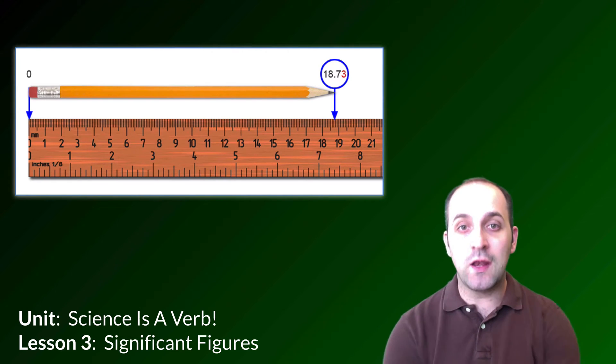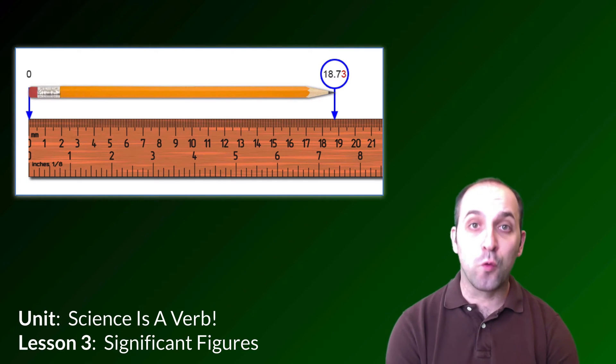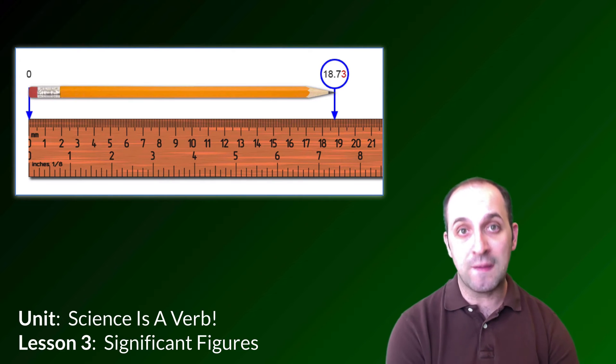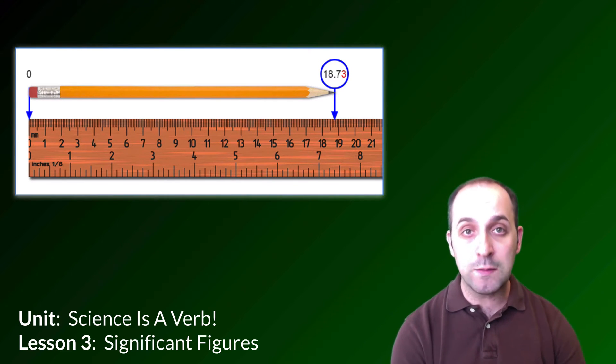So here you see a pencil, right? And this pencil, the measurement is being recorded as 18.73 centimeters in length. If somebody gave you this pencil and this ruler and had you measure it, and then they told you that they measured it to be 18.73 centimeters in length, you'd probably be cool with that.